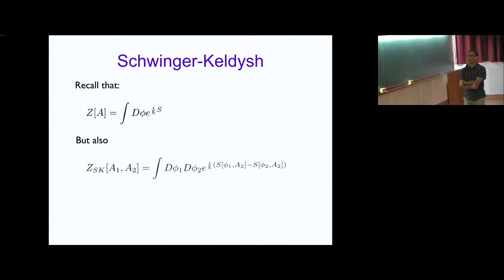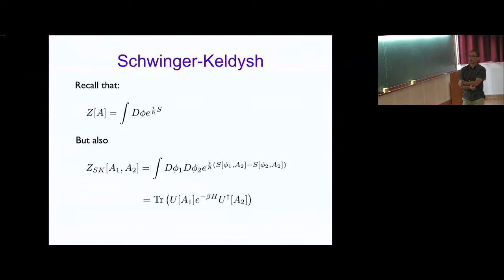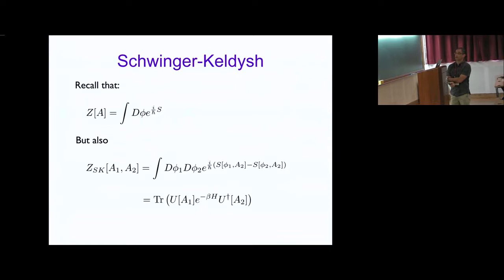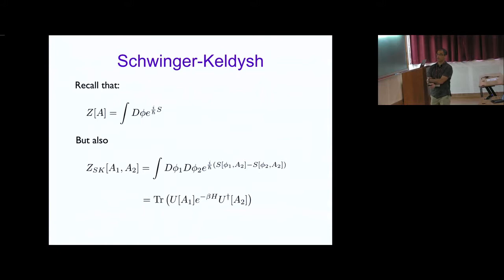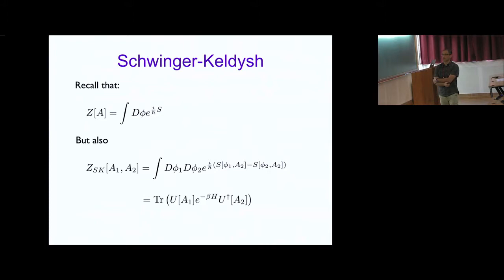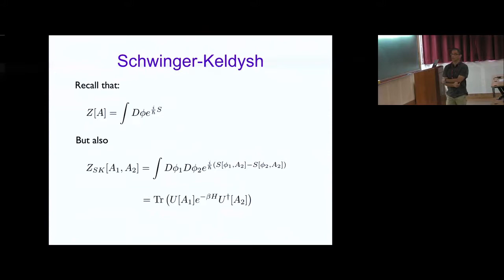We can write down the generating function in vacuum as a functional integral, and we can do the same for Schwinger-Keldish theory. In the past there's some boundary condition that relates the two fields. There's also a more formal way of writing down the Schwinger-Keldish generating function: U is the time evolution operator in the presence of source A₁ and U† is its Hermitian conjugate in the presence of source two. These two formulations are equivalent and I'm going to use both.